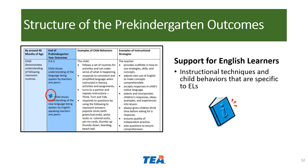Embedded within the guidelines are instructional techniques and child behaviors specific to English learners. These sections are indicated by a book icon and are meant to provide further guidance when working with English learners during instruction in English. It should be noted that the Texas Pre-K guidelines are meant for all pre-kindergarten children regardless of the child's home language. The additional instructional strategies and child behaviors indicated by the book icon are supplements to the Texas Pre-Kindergarten guidelines.